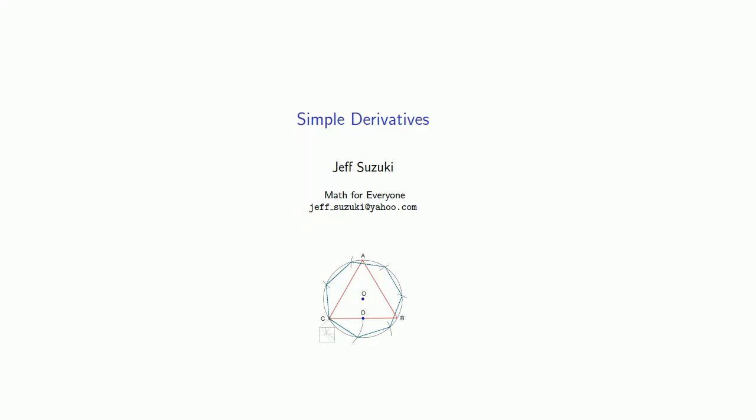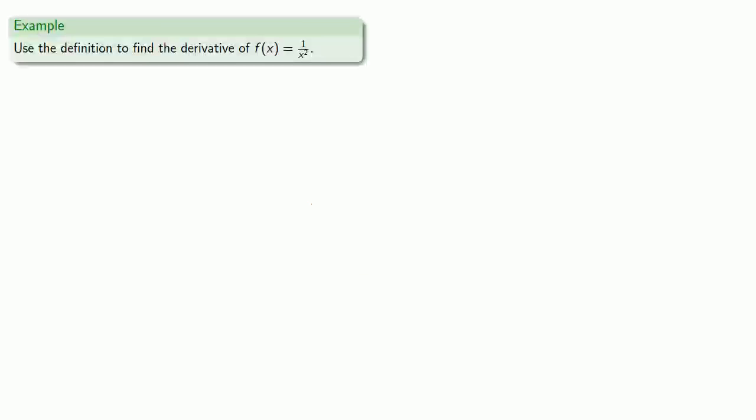Now that we have some properties of the derivative, let's go ahead and find some derivatives. So let's find the derivative of 1 over x squared using the definition.